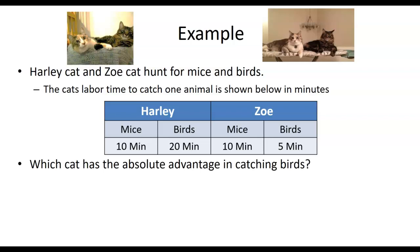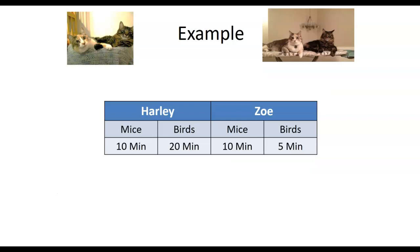So which cat has the absolute advantage in catching birds? It's going to be Zoe. Why? Absolute advantage: who can do it the best? And the best is the least amount of time. Five minutes is less than 20 minutes. You want the low work numbers. In the output questions, you want to be able to produce the most. Now you want the lowest numbers, the most efficient use.